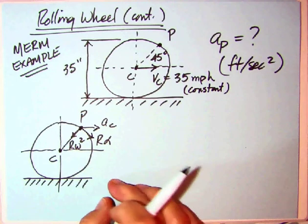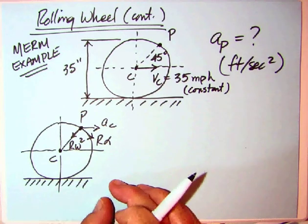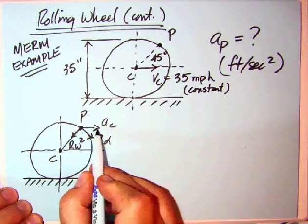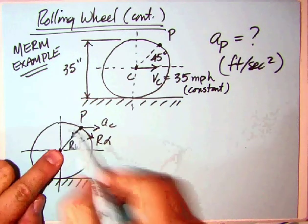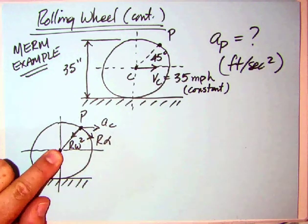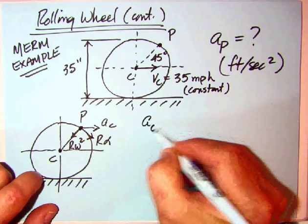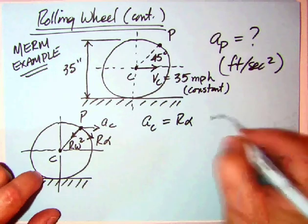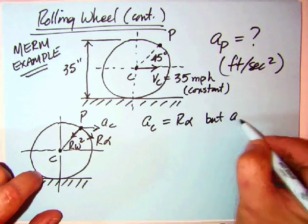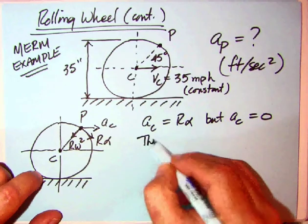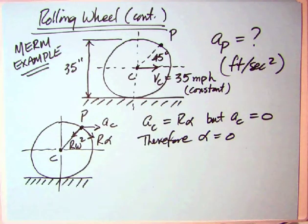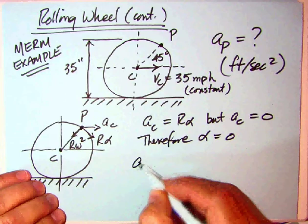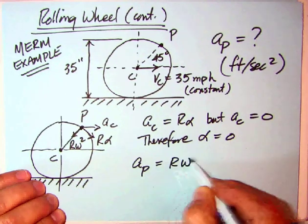Let's write down our relative motion equation. If we had this point P, we would have our translation A sub C and our velocity of P relative to C as if C is fixed, our R alpha perpendicular and R omega squared. However, we learned that AC is equal to R alpha, but AC equals zero, therefore alpha equals zero. So the two terms A sub C and R alpha go away, and what you're left with is the acceleration of P is merely equal to R omega squared.